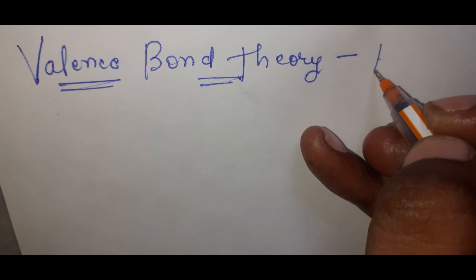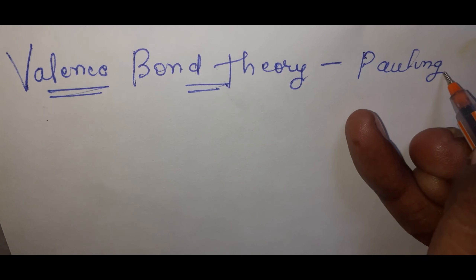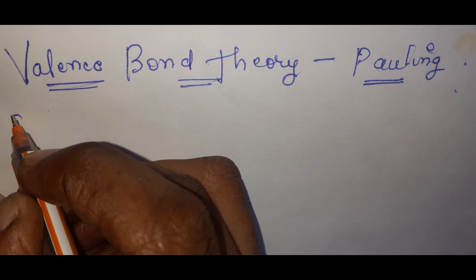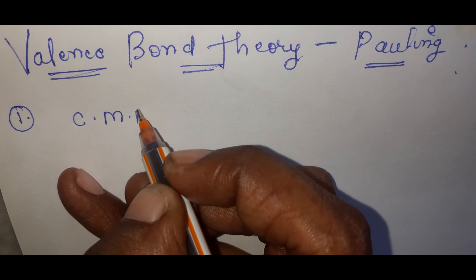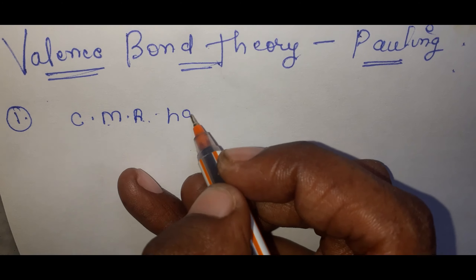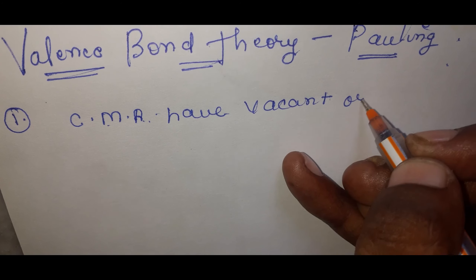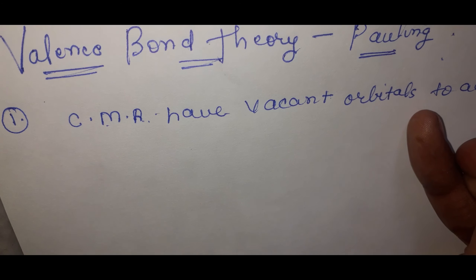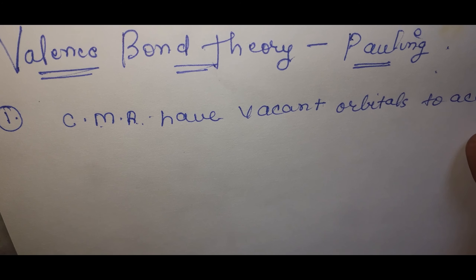Valence Bond Theory was given by Pauling. Postulate number one: the central metal atom must have vacant orbitals to accept lone pairs donated by the ligands.